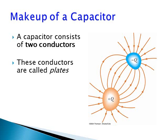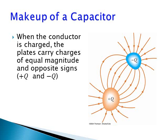However, the shapes of these objects can be completely arbitrary. When the system of these two objects functions as a capacitor, the charges on the plates have equal magnitude but opposite signs. So, the charges are plus Q and minus Q, as shown in this figure.